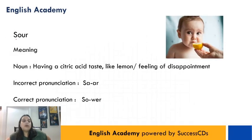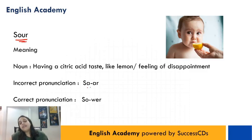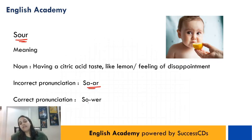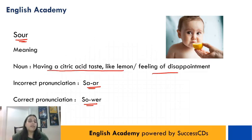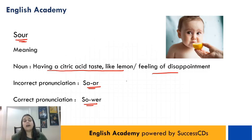The next word is S-O-U-R. Log usually isse pronounce karte hain 'saar', but iski correct pronunciation is 'sour'. Aur iska matlab hota hai having a citric acid taste like lemon, or a feeling of disappointment. Toh aapka jo khatta taste hota hai ya kisi ke prateep ki koi khattaas hoti hai, toh woh 'saar' na hoke, it is 'sour'.